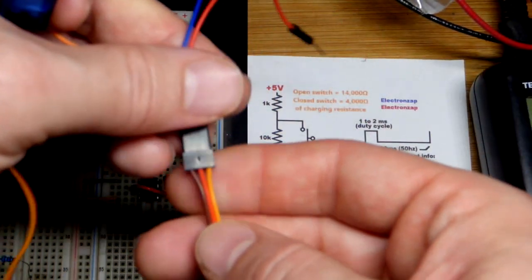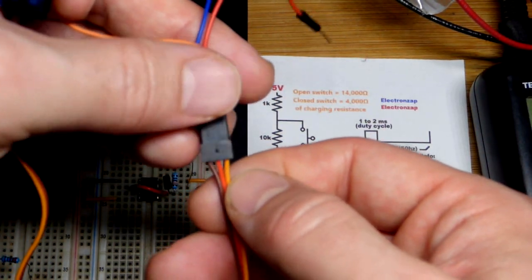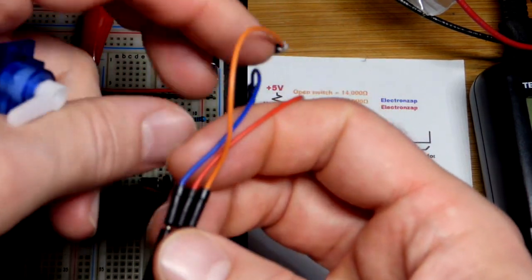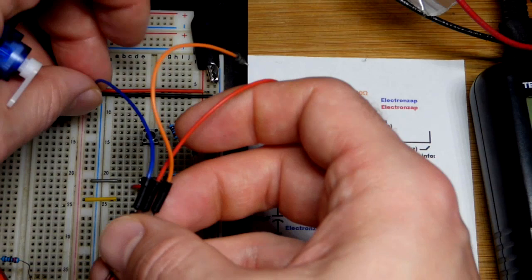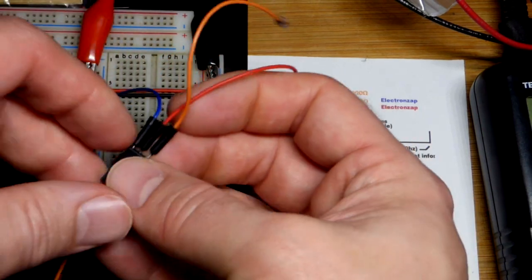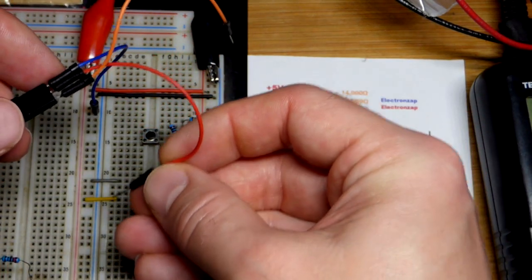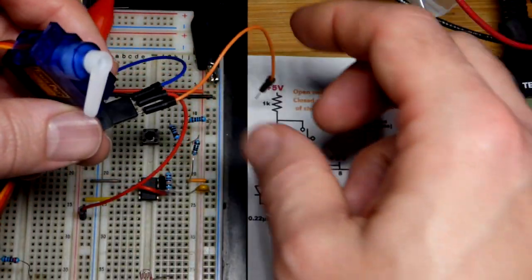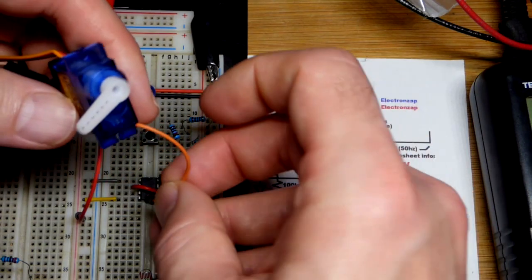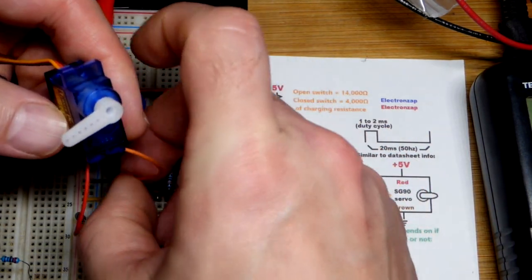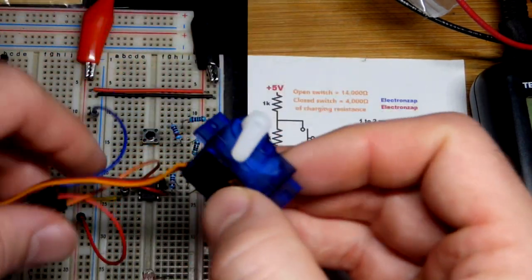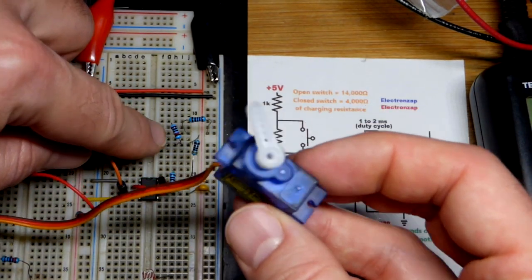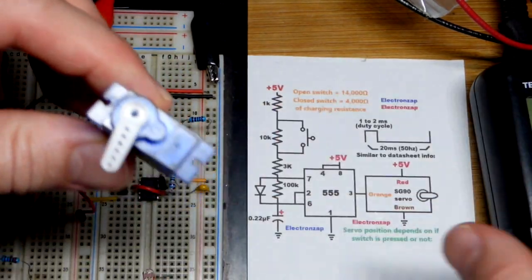So we have brown, red, and then orange. So brown is ground right there. I put a blue jumper. Just breadboard jumpers. And then the positive supply right there is red. And our servo moved into a position due to no signal, basically. And now we plug it in and we move to that position. So now we can test it. There you can see that it moves. Pretty straightforward.